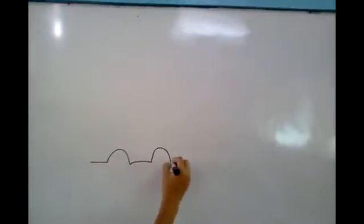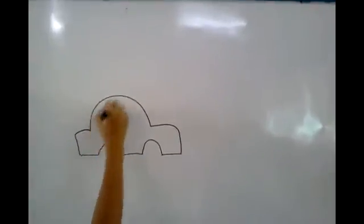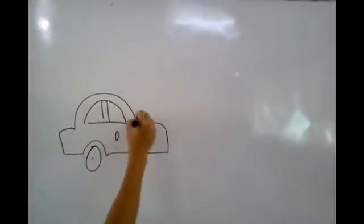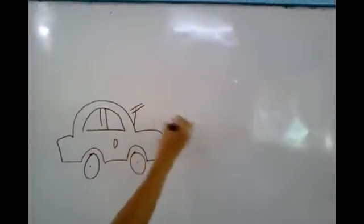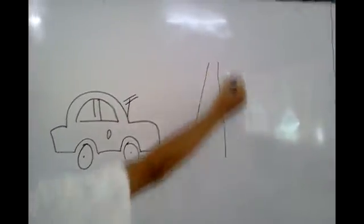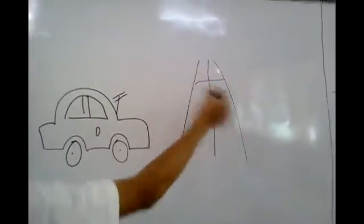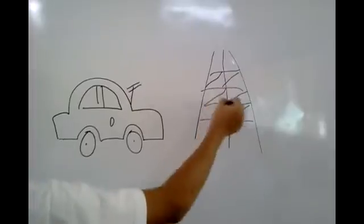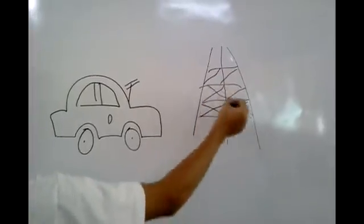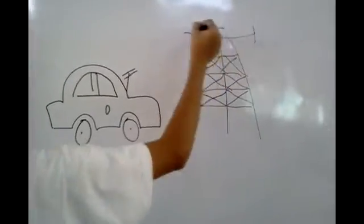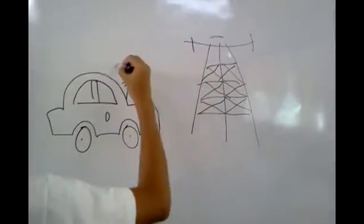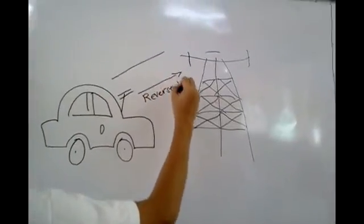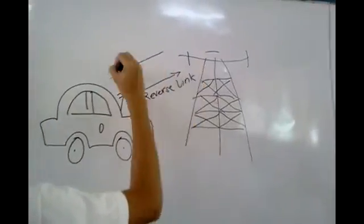What is Cellular Mobile Communication? Well, it is a system which uses a large number of low-power wireless transmitters to create cells. Cells are the basic geographic surface area of a wireless communication system. The variable power levels allow cells to be sized according to the subscriber density and demand within a particular region.